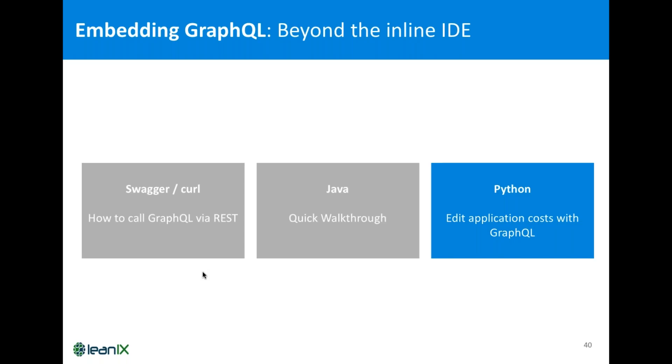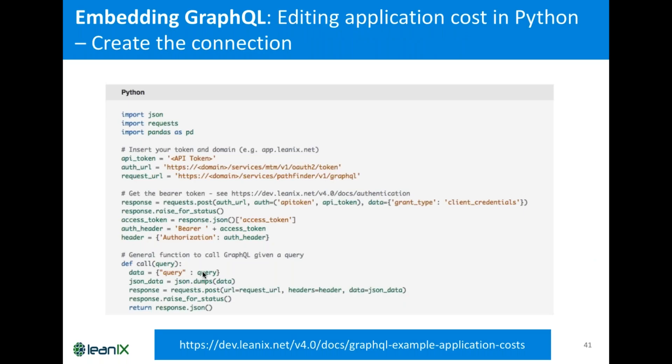And similar, it's working from Python, and we take a look at one concrete example, which is to edit application costs. So, for Python, let's quickly start with the connection. It's similar built like in Java. So, you have some JSON libraries, you have an API token, and also a request URL, and those couple of lines will handle the authentication. And we have a helper method that takes a query, takes it into a JSON array, does the request, it's post with GraphQL, so it's always post, and gets the result. We have also the source code available, you can check it afterwards.